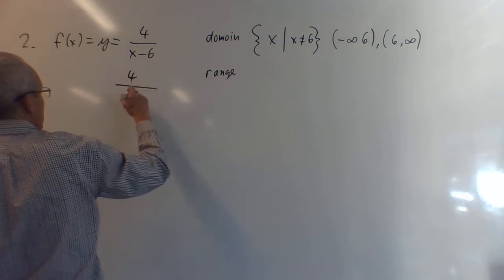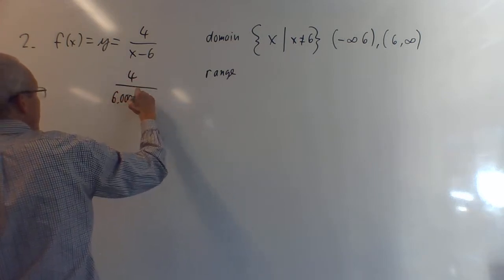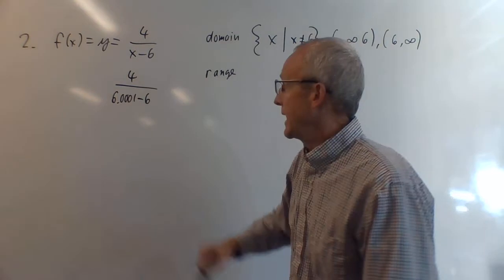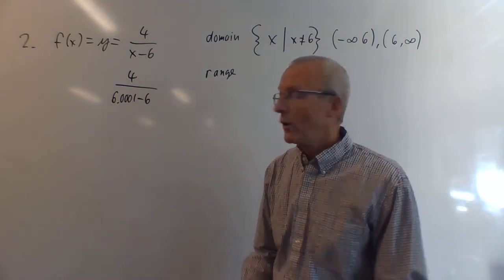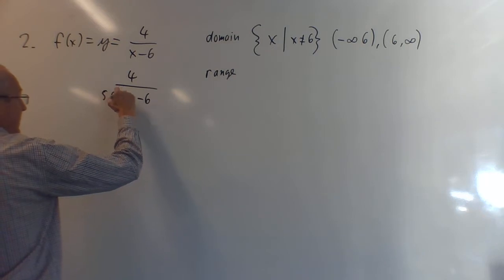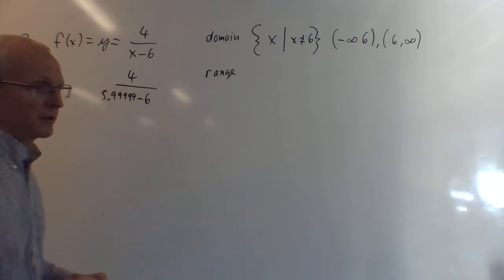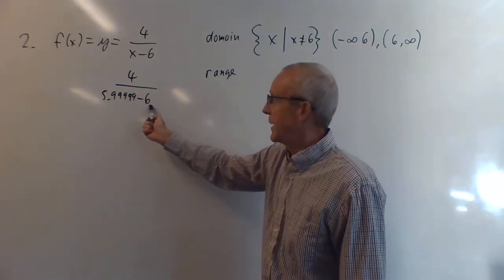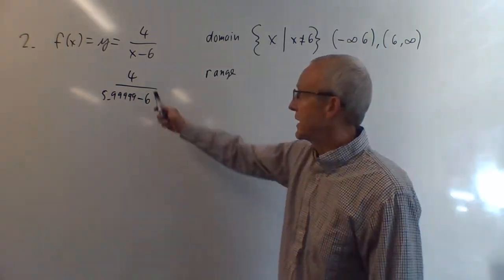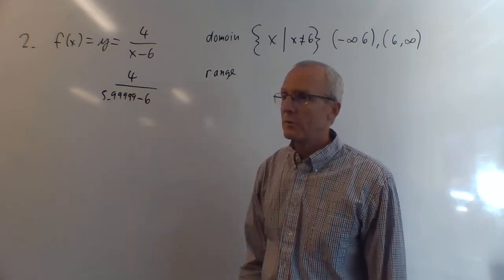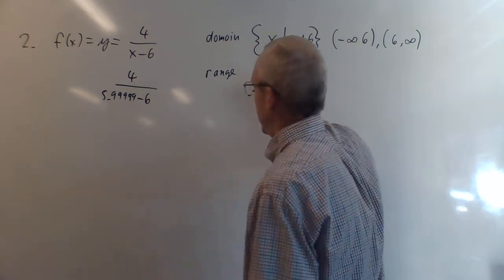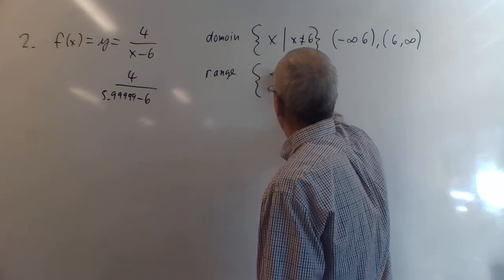To confirm: by making x slightly above 6 we can get large positive values (like 40,000), and by putting x slightly below 6 we get large negative values. So every value except zero is achievable. The range is all y ≠ 0, or (-∞, 0) ∪ (0, ∞).